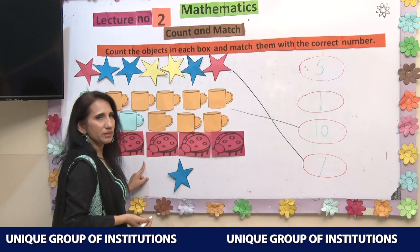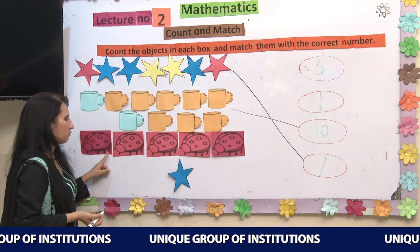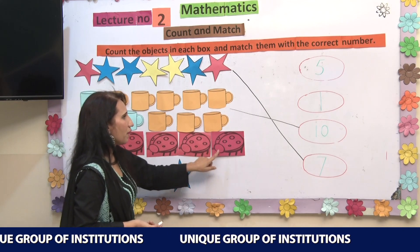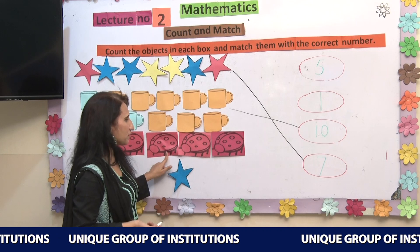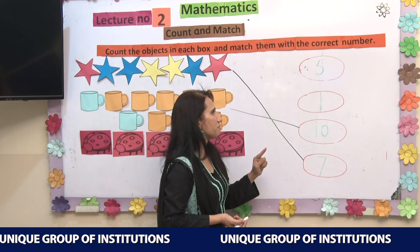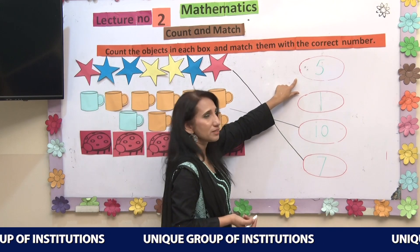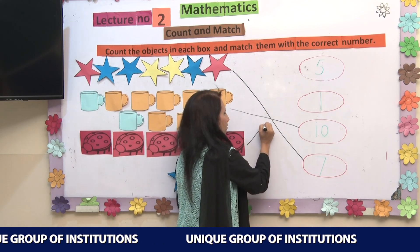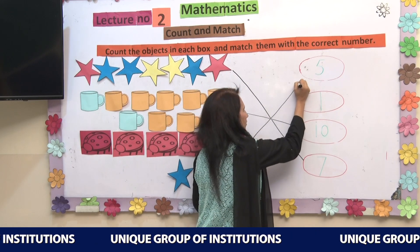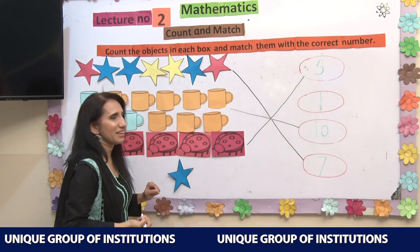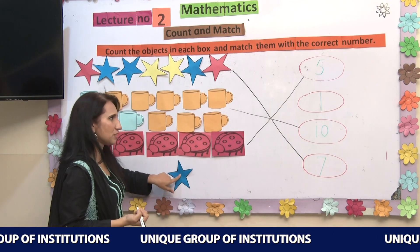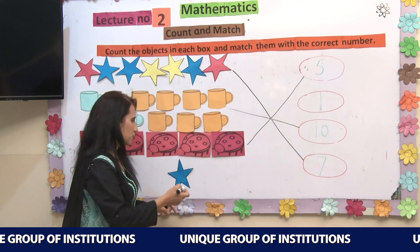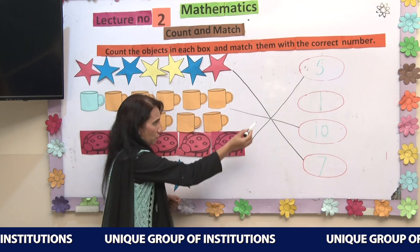Here are some ladybugs — let's count: 1, 2, 3, 4, 5. There are 5 bugs. Number 5 is written here, so I will match this with number 5. Now I am only left with 1 star — here is number 1, so let's match this with number 1.